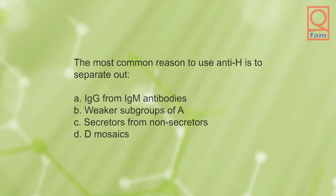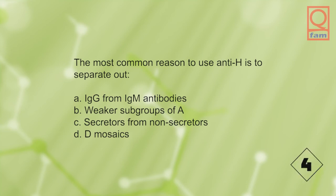The most common reason to use anti-H is to separate out: A) IgG from IgM antibodies, B) weaker subgroups of A, C) secretors from non-secretors, D) mosaics. The answer is B, weaker subgroups of A.